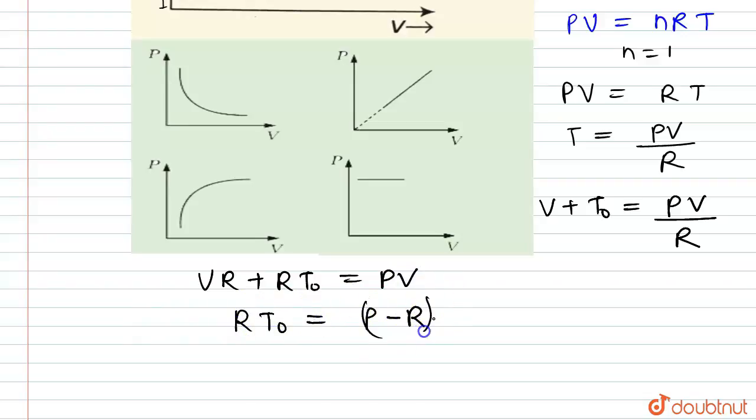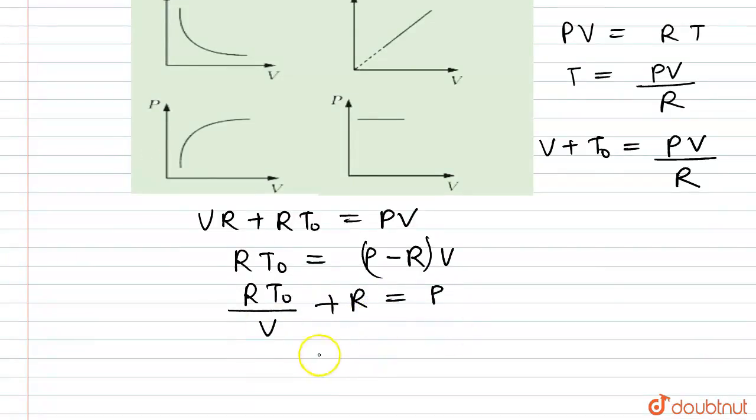So from this we can write that RT₀/(V + R) equals P. So from this equation we can write that P is inversely proportional to the volume, where P is the pressure and V is the volume.